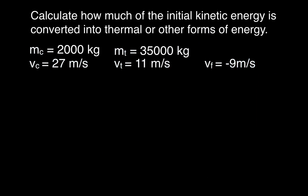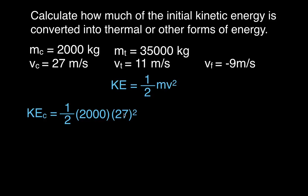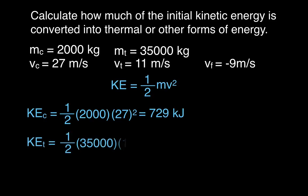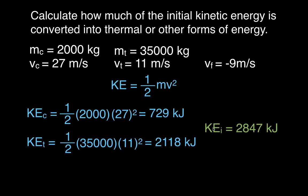Now let's figure out how much energy was lost. Since this is an inelastic collision, kinetic energy is not conserved. We sum up the kinetic energy before and then after, and find the difference. The kinetic energy of the car is one-half times its mass times its velocity squared: one-half × 2,000 × 27² = 729,000 joules, or 729 kilojoules. For the truck before the collision: one-half × 35,000 × 11² = 2,118,000 joules, or 2,118 kilojoules. Note that kinetic energy is a scalar, so we leave off the negative sign on the truck's velocity.